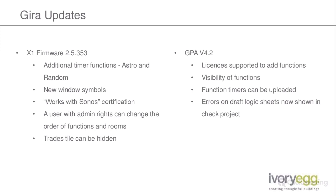A couple of other updates missed in GPA 4.2: draft logic sheets in the draft folder were previously not tested for errors when you did a check project. Now they are checked, which means you can work on a draft and use Check Project to see if your logic is correct. The other big one is the 'Works with Sonos' certification - to achieve this they had to change the device page when logging in via IP address, changing 'playlists' to 'favorites', which was all that was needed to get the certification.